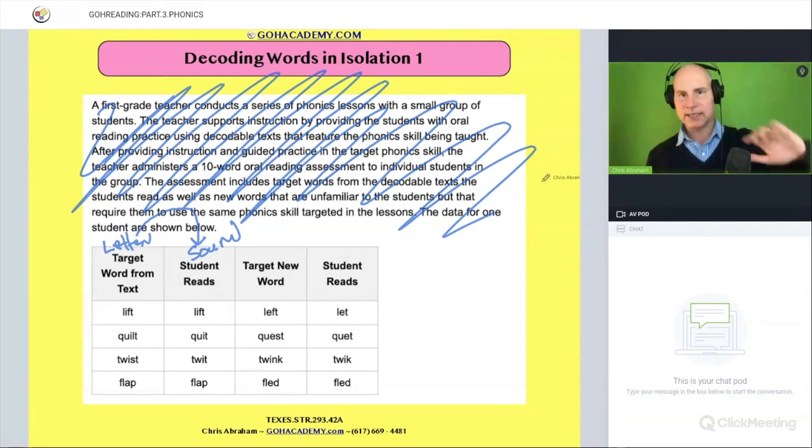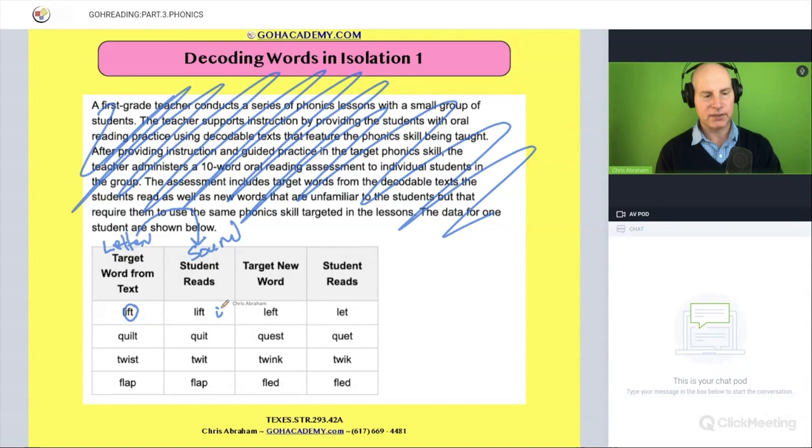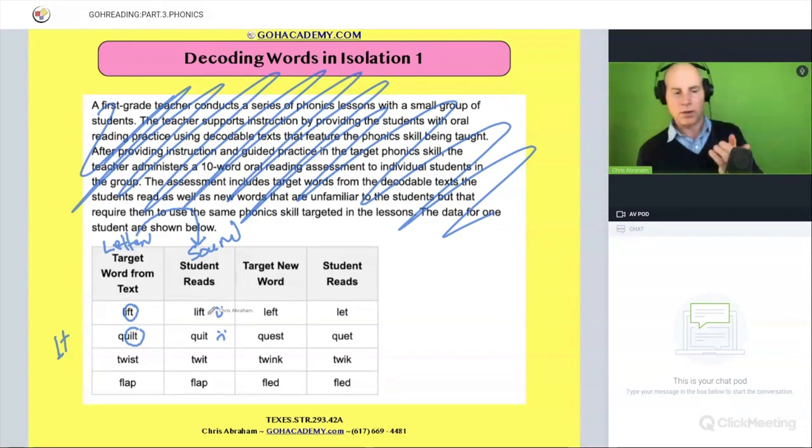We're going to have to read the assessment to find out if these words were in isolation or in a story itself. But right now, these are the target words, and this is the student's decoding of them. We're probably going to look to see where they went wrong. Let's analyze if there's any miscues in their decoding. Here's the word lift, they got it. That has a blend. Here's the word quilt, and they said quit. Uh-oh, a frowny town there with LT.